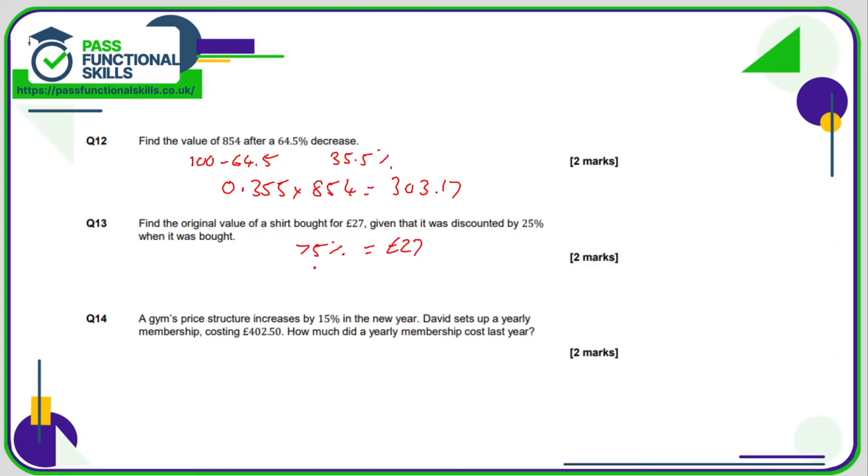So what I'm going to do is I'm going to work out what 1% is first of all. If 75% is £27, then 1% is £27 divided by 75, which is 0.36, so 36p. So 100% is going to be £36 multiplied by 100, and that will give me £36. Challenging question, that one.